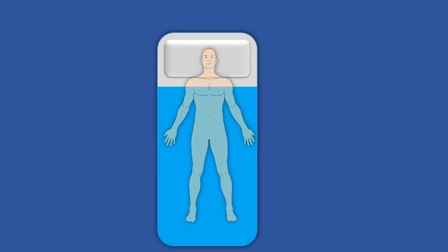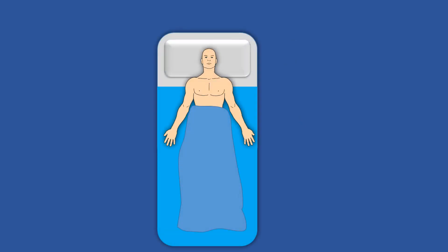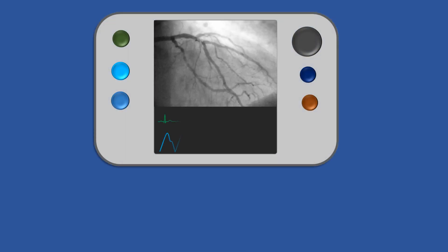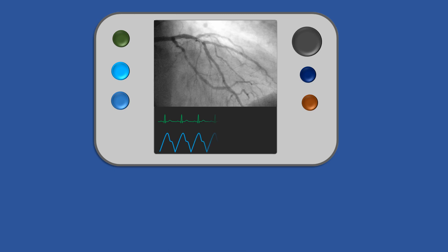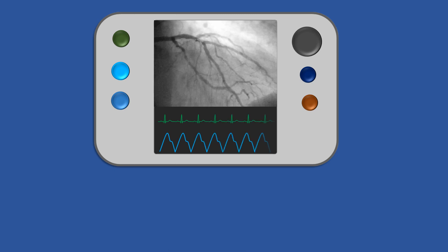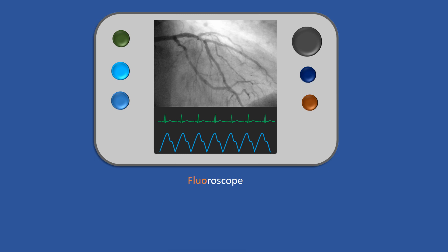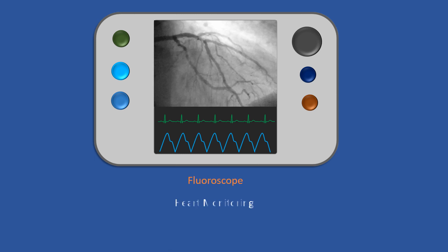At the beginning of the procedure, a local anesthetic is injected, and a mild intravenous sedative is administered to help the patient relax. Angioplasty procedure lasts between 30 minutes and 3 hours, and during the procedure the heart activity is monitored constantly, utilizing a continuous X-ray device called a fluoroscope.